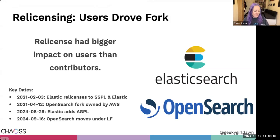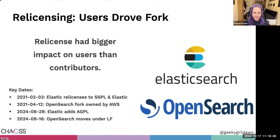I'm looking at three case studies: Elasticsearch and OpenSearch, Redis and Valky, and Terraform and OpenTofu. They're very different projects. The Elasticsearch re-licensing was interesting because the re-license had a much bigger impact on users than on contributors. The re-license happened in February 2021; two months later they had an OpenSearch fork driven out of Amazon AWS. Interestingly, Elastic has recently added the AGPL, so they are now under an open source license again, though I'm not sure it'll make much difference.